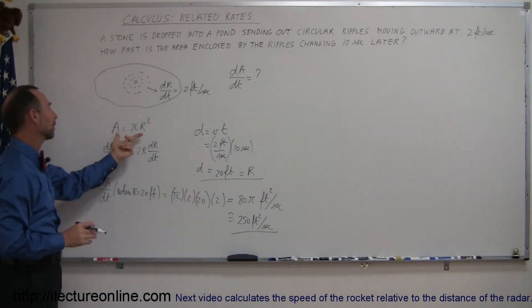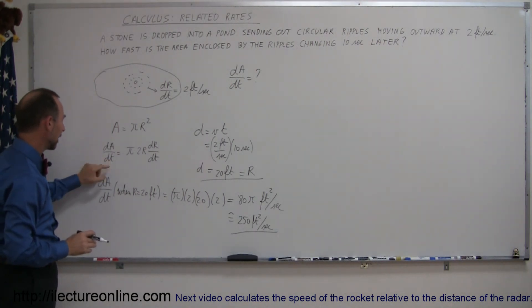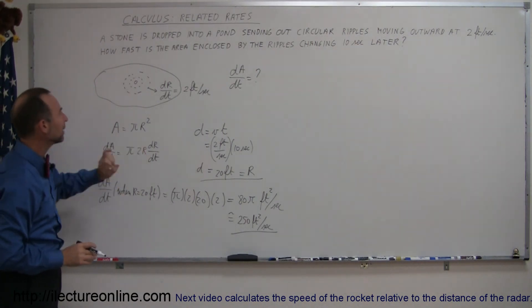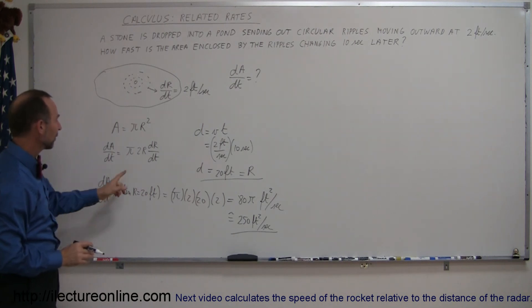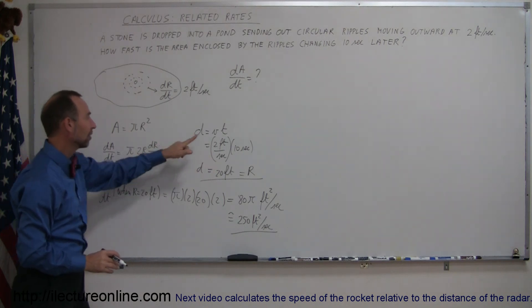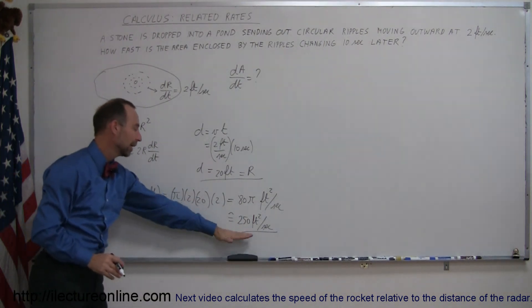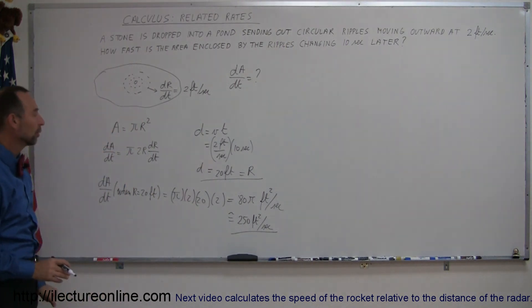We come up with an equation relating area and radius. We take the derivative of both sides with respect to time to get dA/dt and dr/dt. Then we figure out dr/dt, which was given, and the radius after 10 seconds, which is 20 feet. Plug those two values into our equation and we get the change of the area with respect to time. That's how you do those.